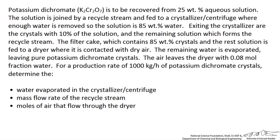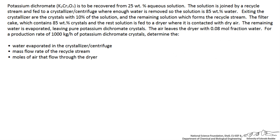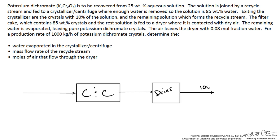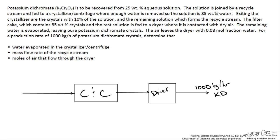Let me take this information and start sketching out our picture. We have a feed that enters our crystallizer centrifuge combination. A mixture leaves the crystallizer centrifuge and enters a dryer, then leaving the dryer is our final product — 1000 kg per hour of potassium dichromate, which I will call KD. There is a recycle stream that comes out of the centrifuge and crystallizer and is fed back into the main feed line. Water is being evaporated causing crystals to precipitate, and into the dryer we have air removing water from the crystals, so we have a stream coming out of the dryer that is both air and water.